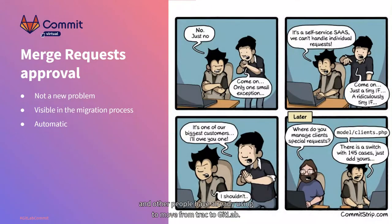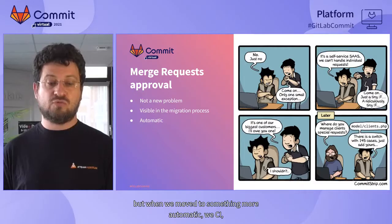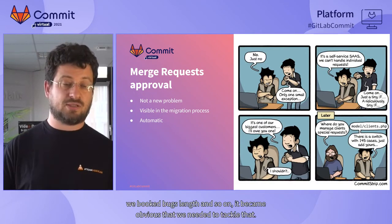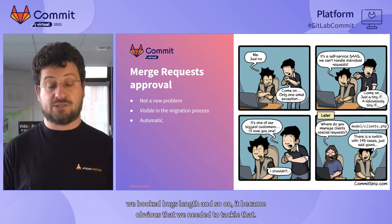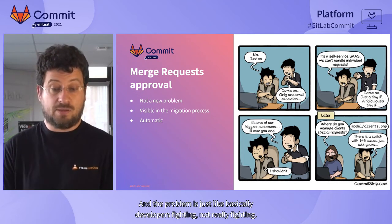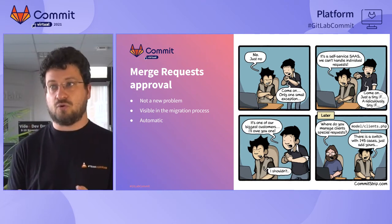The second issue we had was basically what we call merge request approvals. It's not a new problem that arose when we moved to GitLab — it was already existing. But when we moved to something more automatic with CI and linked bugs, it became obvious that we needed to tackle it. The problem is basically developers having disagreements — not everyone is merging at the same rate. It's very easy to open a merge request, see that CI passes, and have one developer say 'yeah, that's okay' and merge it.